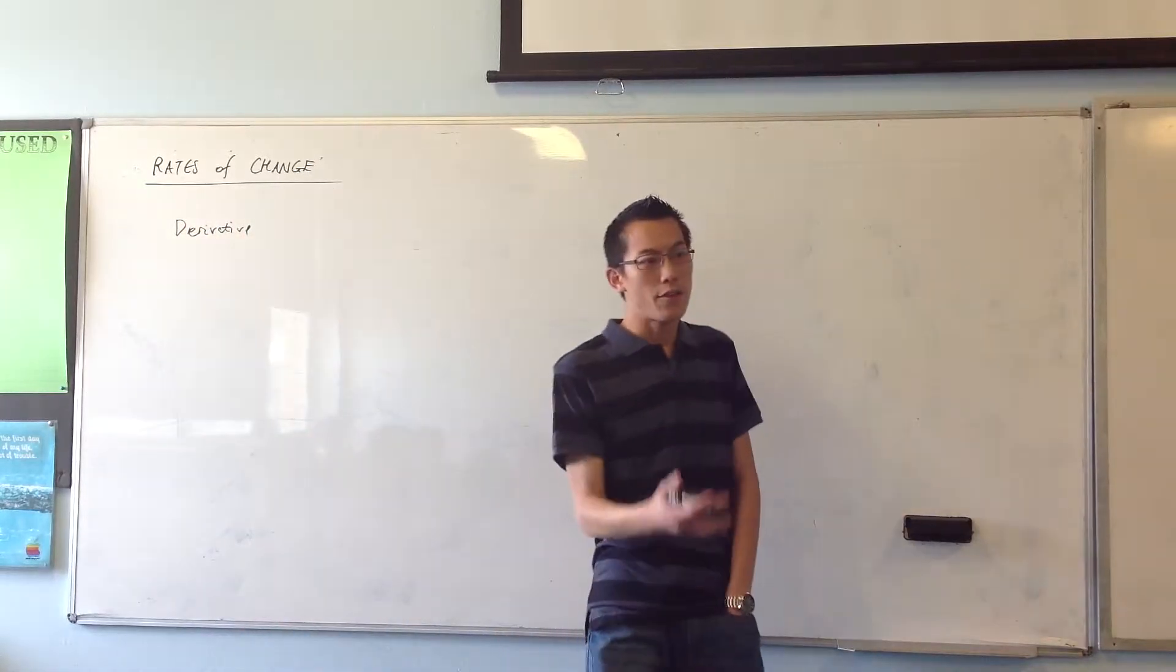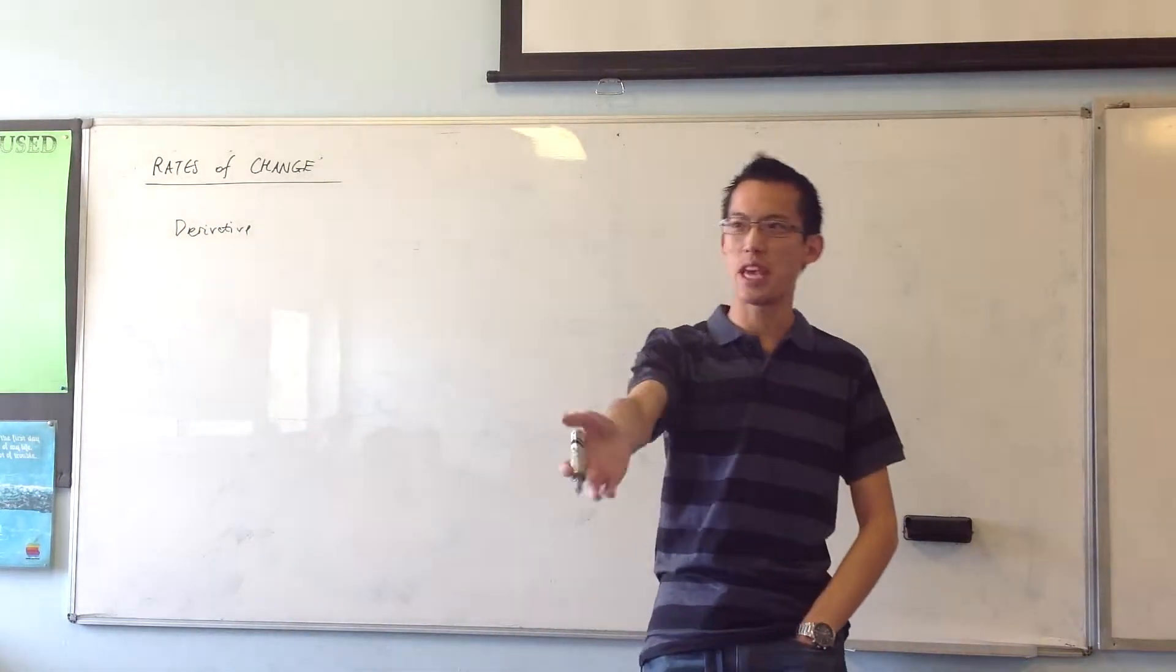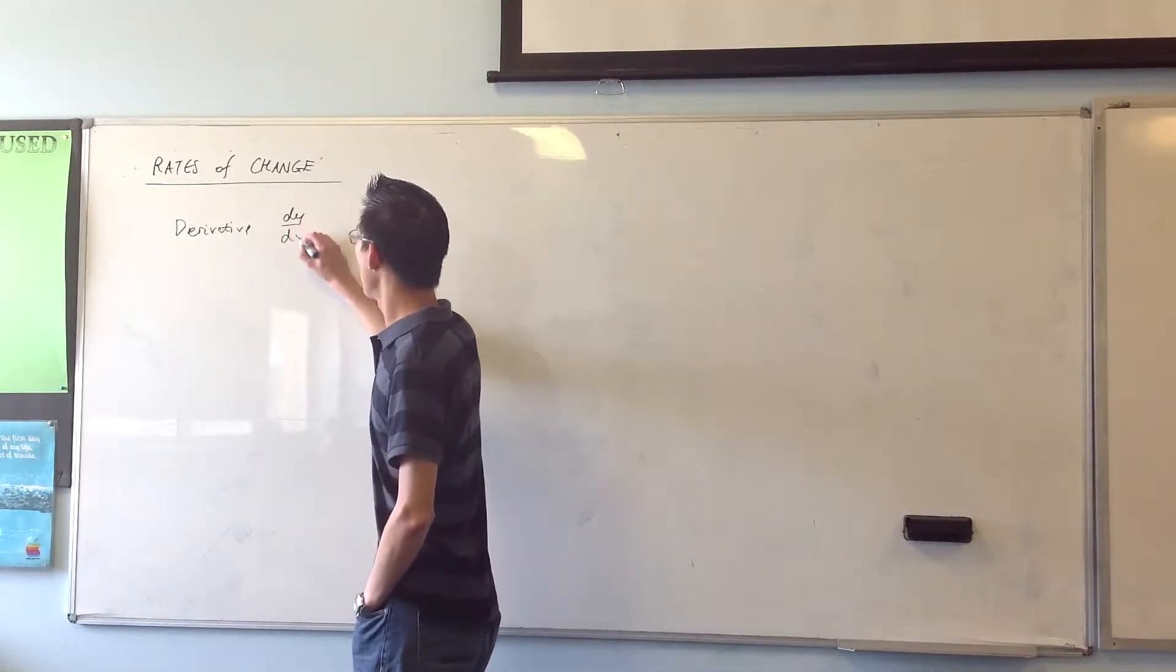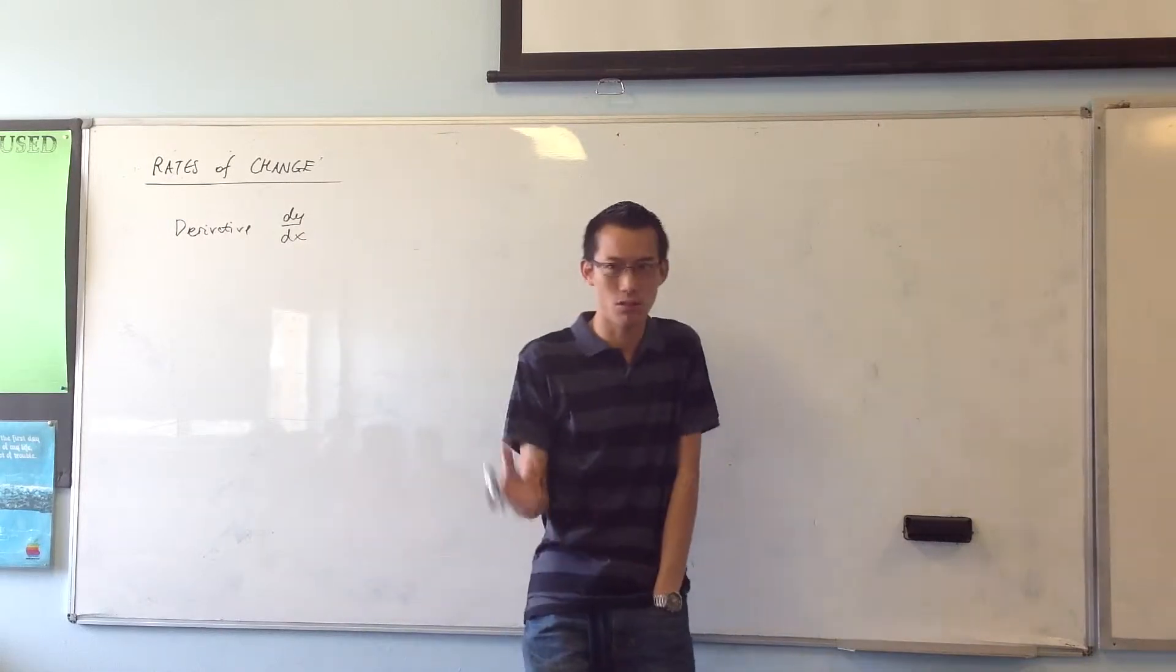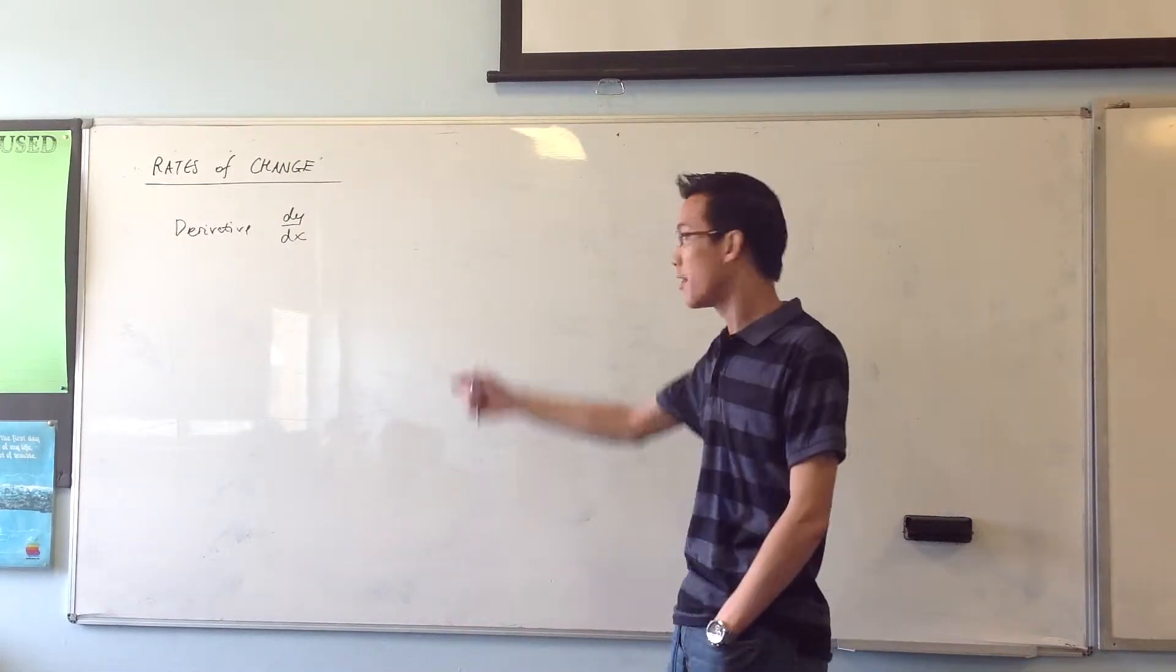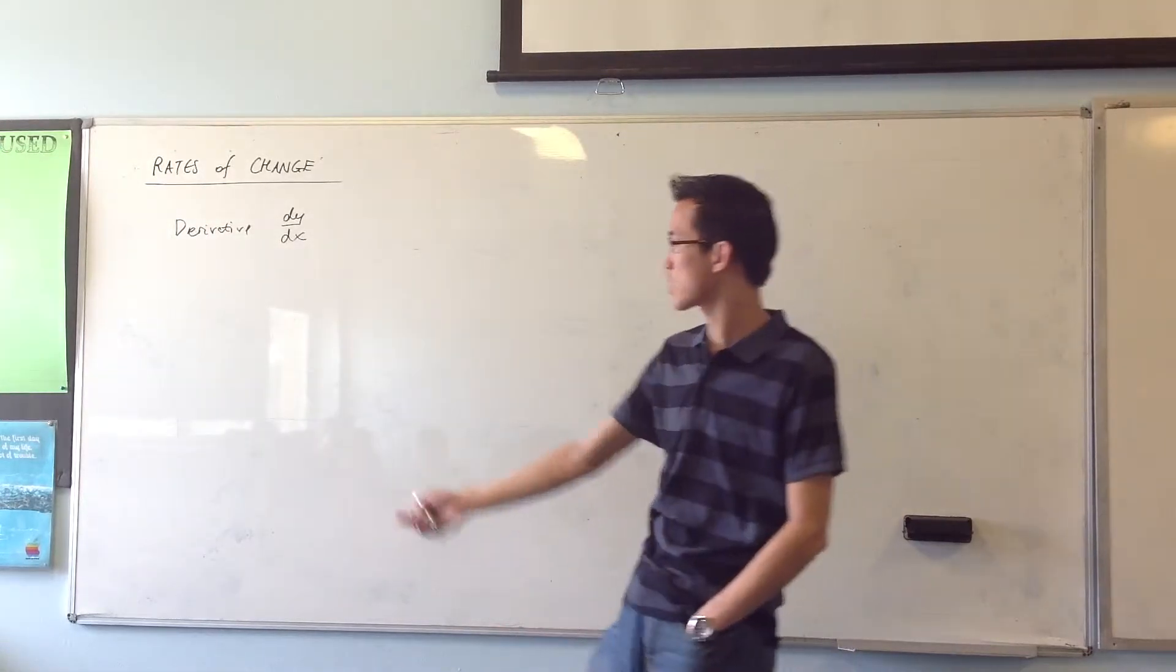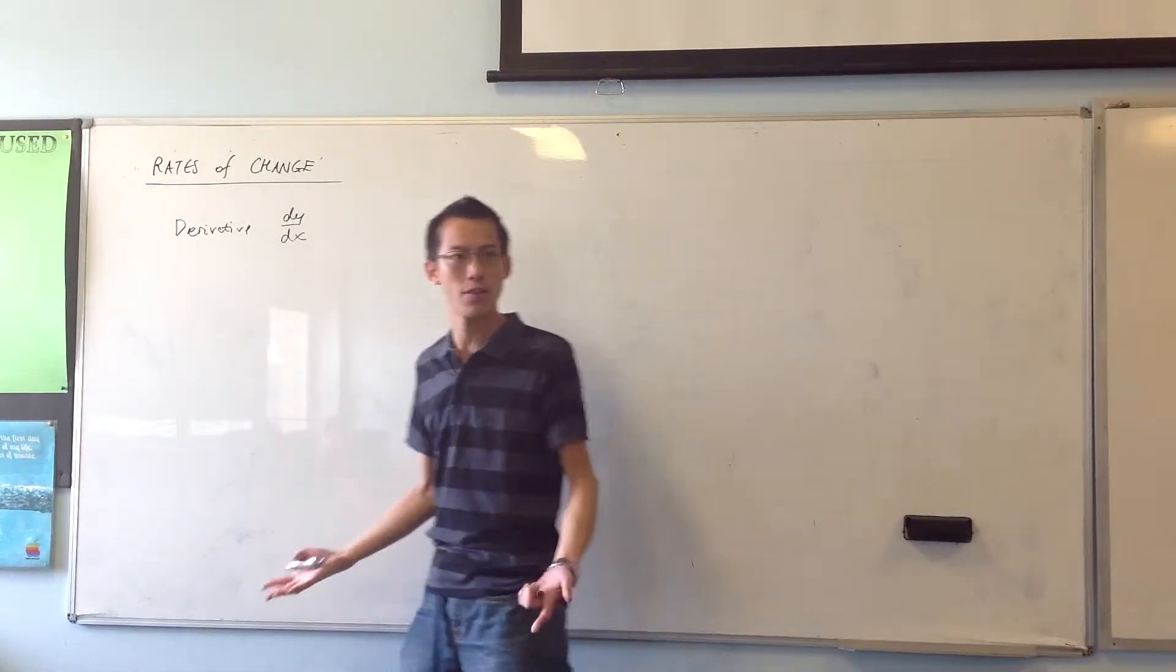If you have a function like y equals x squared, or something like that, the derivative, we would usually write that as dy on dx. Yes, this is all just old stuff. That's just a shorthand way of actually writing gradient, because that's what derivative gives you. It gives you the gradient function.